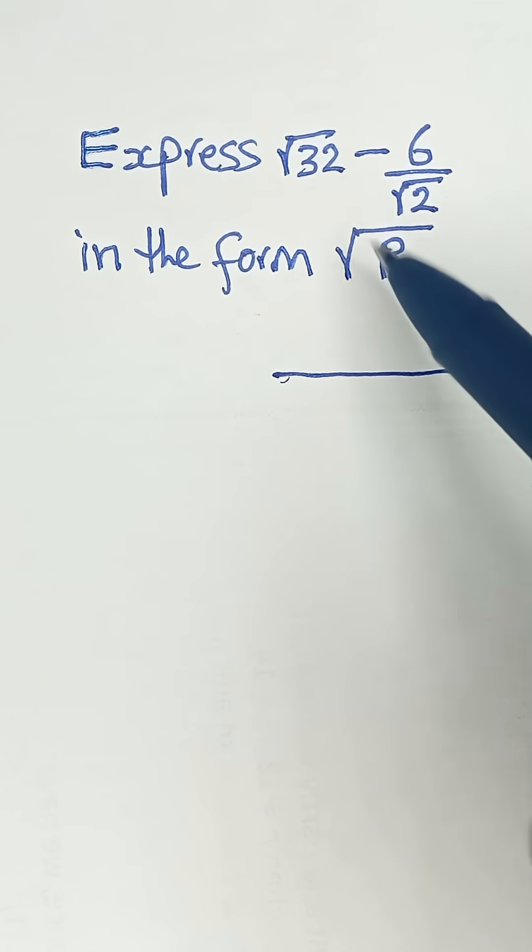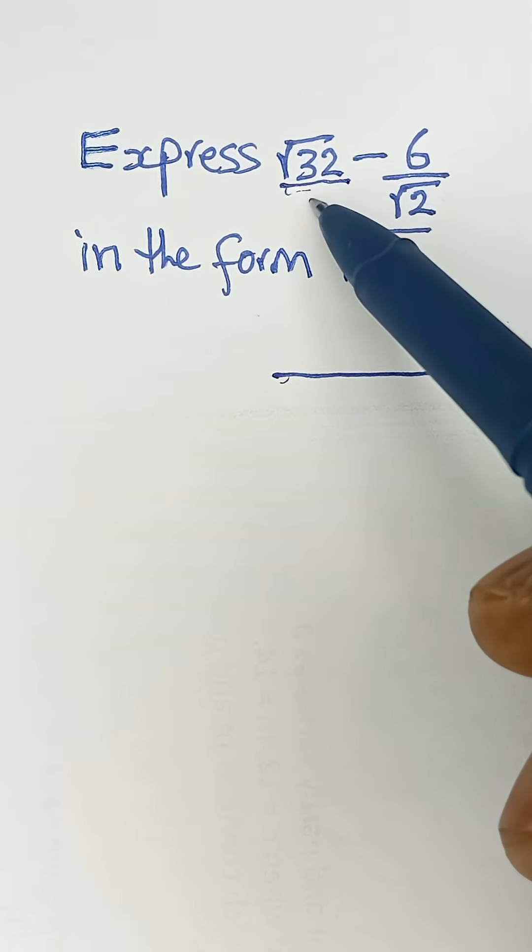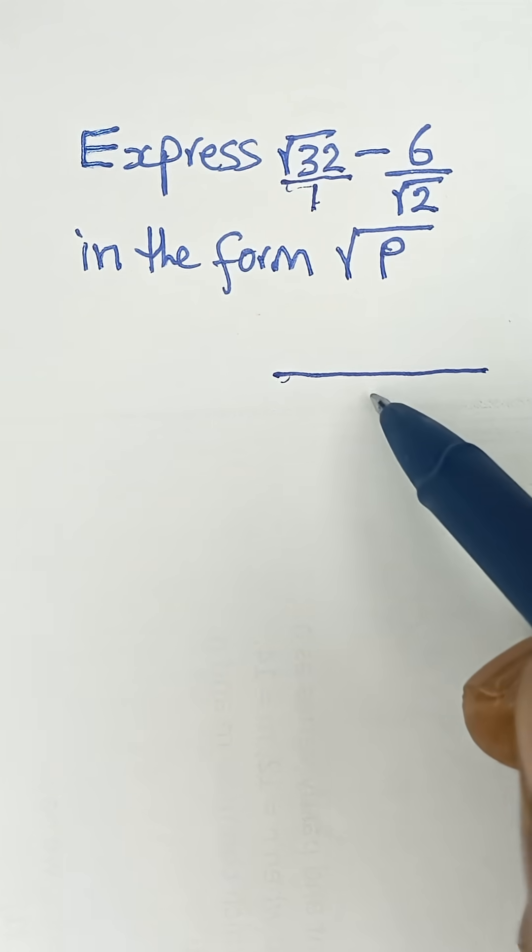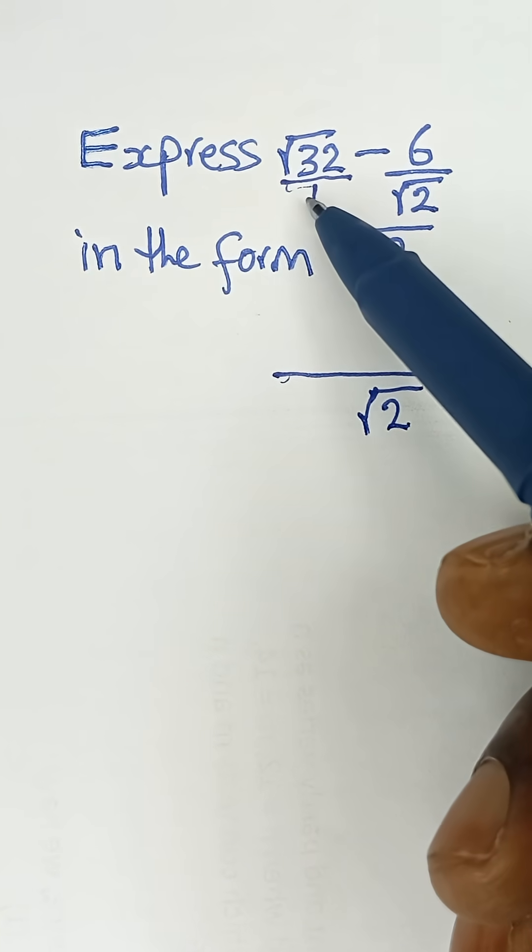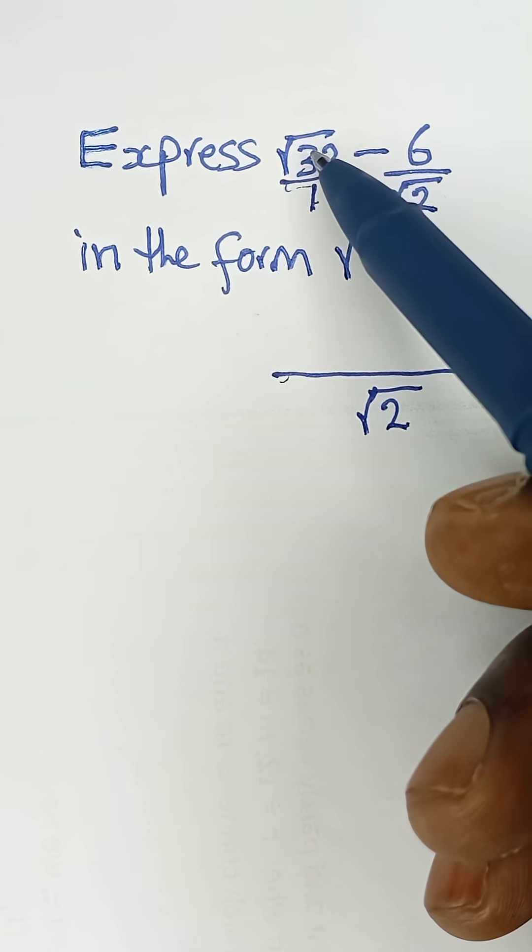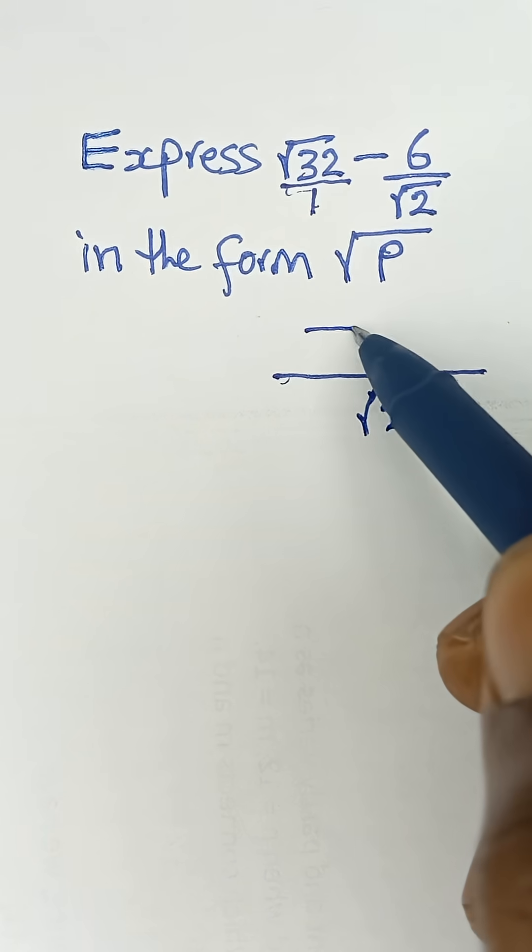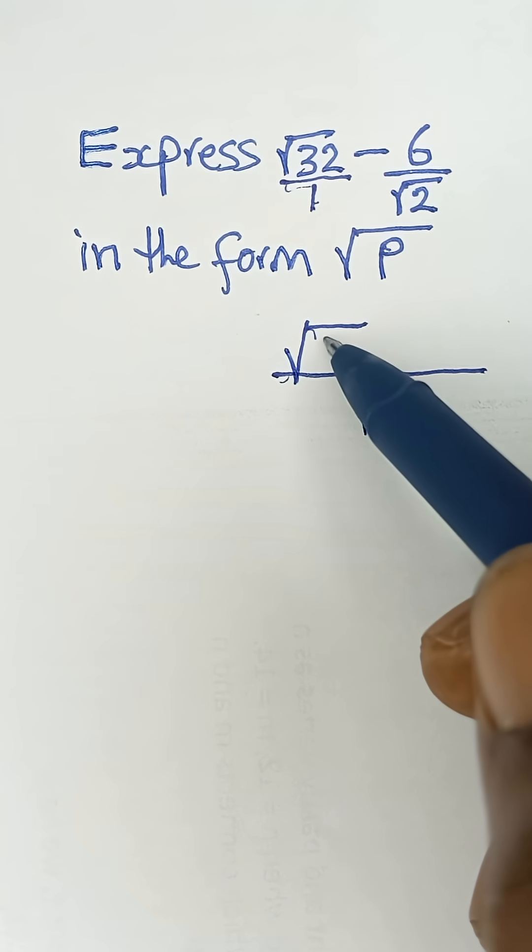So what's the LCM of √2? And you know this is like over 1. So the LCM is simply √2. So √2 divided by 1 is √2. Multiply by √32. That will give us √64.